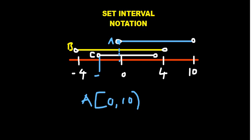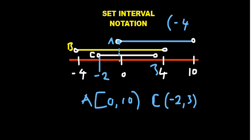For set C, say negative 2 and 3 — both ends are not shaded, so we represent C using curved brackets: negative 2 all the way up to positive 3. For set B, if both ends are part of the set, we use square brackets from negative 4 up to 4. That is very important when it comes to set interval notation.